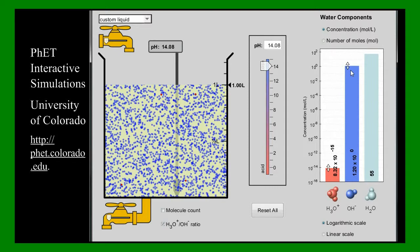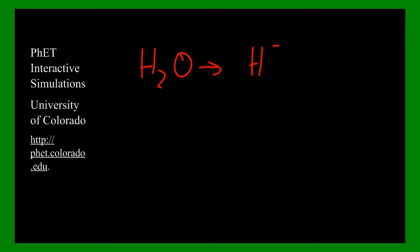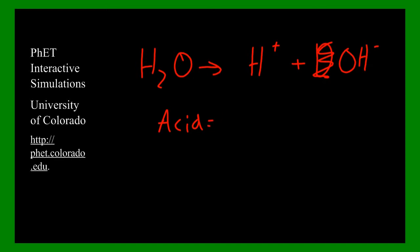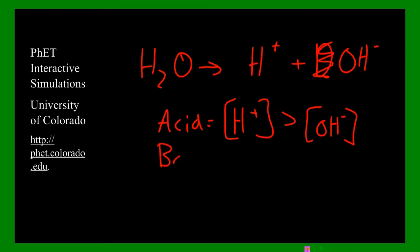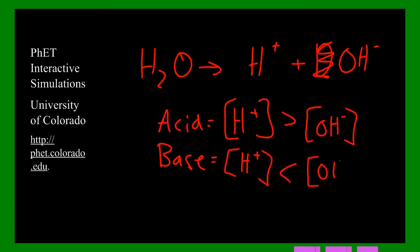This should make sense to you because in pure water, H2O will break down to form hydrogen ions (H+) plus hydroxide ions (OH-). In an acid, the H+ amount is greater than the hydroxide amount - the hydrogen ion amount is greater than hydroxide. In bases, it's the opposite - a base has more hydroxide than hydrogen, or you can say it has less hydrogen compared to the hydroxide.